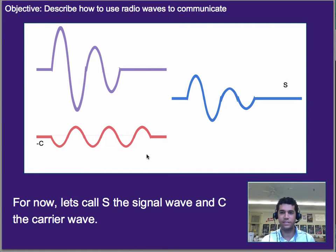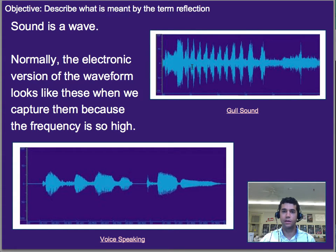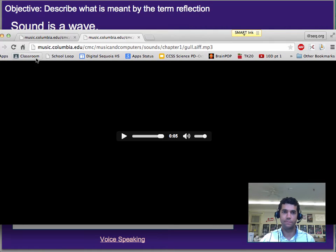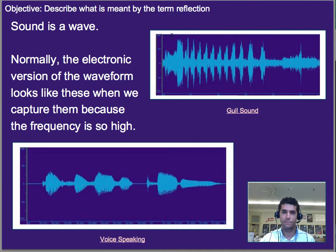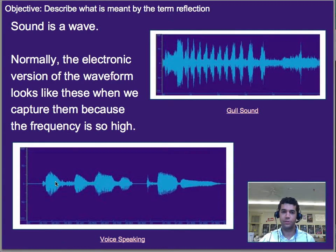For now, let's call the S wave the signal wave and the C wave the carrier wave. Now, sound is a wave — we've talked about that before — but normally we're recording sounds in electronic form, such as with a microphone, and so the waveform will look something like this. Here we have a waveform for a goal sound, which I'll play for you. We can see how, as the goal kind of calls, we can actually see the spikes in the electronic waveform, and then there's that weird sound at the end. Similarly, we have the waveform for a voice speaking — each syllable kind of results in a temporary spike up, and then it trails off.